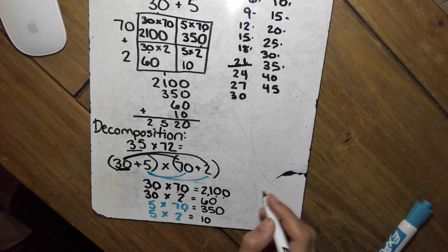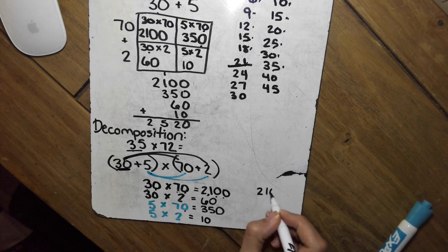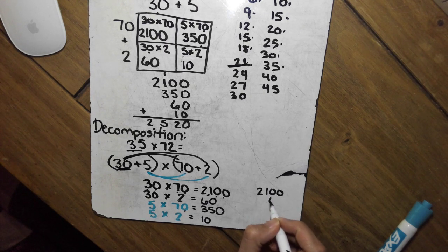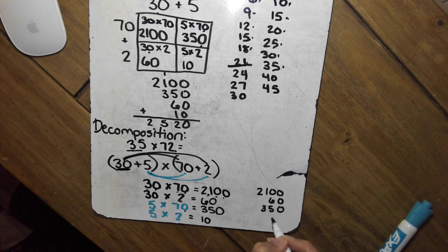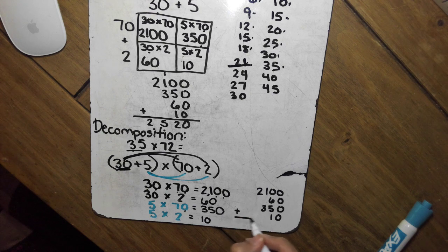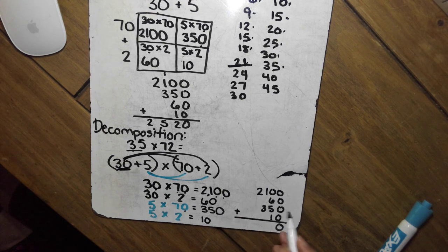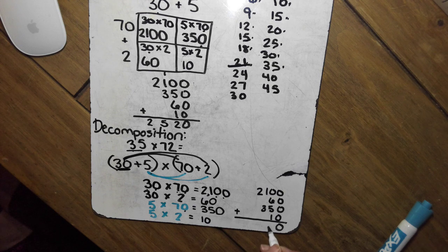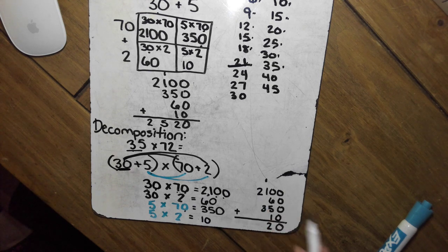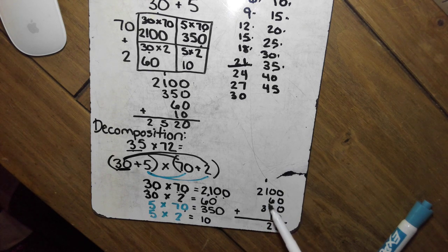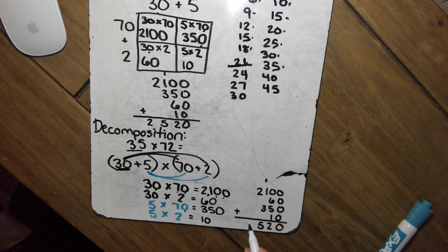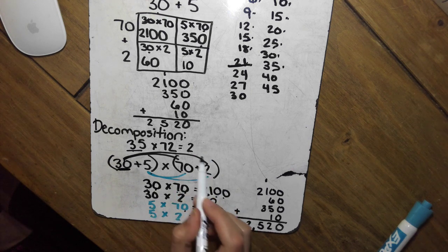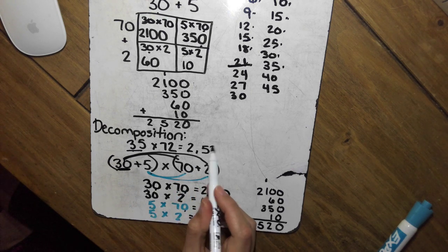And then I'm going to do for my last step, now that I have all the products, I'm going to rewrite them to line up my digits. 1 plus 5 is 6. 6 plus 6 is 12. 1 plus 1 is 2. Plus 3 is 5. 2 plus nothing is 2. The answer is 2,520.